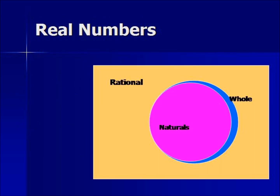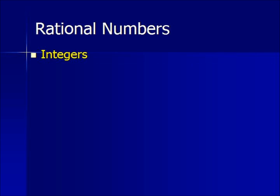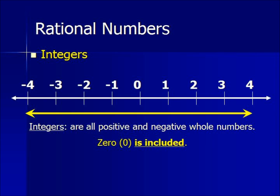So inside our rational block we have natural numbers and whole numbers. Now we have integers. Integers are defined as all positive and negative whole numbers, 0 included, stretching to positive and negative infinity.